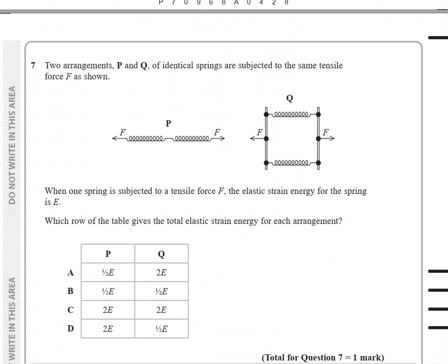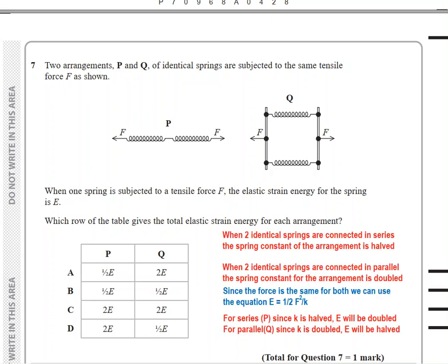Question 7 says two arrangements p and q of identical springs are subjected to the same tensile force F. When one spring is subjected to a tensile force F, the elastic strain energy for the spring is E. Which row of the table gives the total elastic strain energy for each arrangement? For this question, you have to recall the resultant value of spring constant when they're in series as well as when they're in parallel. When two identical springs are connected in series, the spring constant of the arrangement is halved. When in series, spring constant is halved.